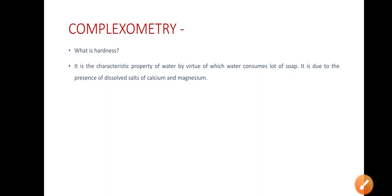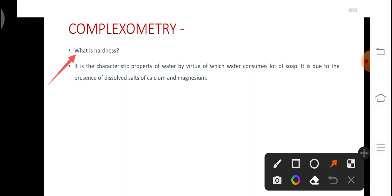An important question which may be asked is what is hardness. In complexometry method we determine the total hardness of water sample. Hardness is basically the soap consuming capacity of water. It is the characteristic property of water by virtue of which water consumes lot of soap, and it is due to the presence of dissolved salts of calcium and magnesium.